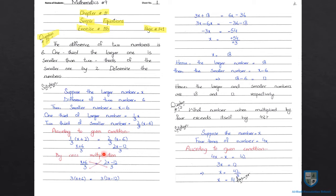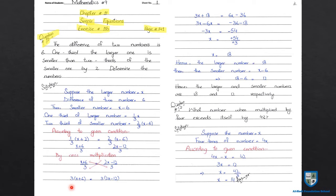Then by cross multiplication: cross multiply करेंगे तो first term के numerator को second term के denominator से multiply करते हैं। यहां पर first term का numerator है x plus 6, तो x plus 6 को 3 से multiply करेंगे। Is equal to: second term के numerator को first term के denominator से multiply करते हैं — 2x minus 12 को 3 से multiply करेंगे। तो 3 को x से multiply करने पर 3x आएगा, plus 3 × 6 = 18, तो 3x plus 18 equal to.